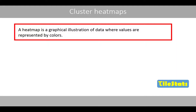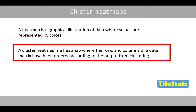A heatmap is a graphical illustration of data where values are represented by colors. A cluster heatmap is a heatmap where the rows and columns of a data matrix have been ordered according to the output from clustering.